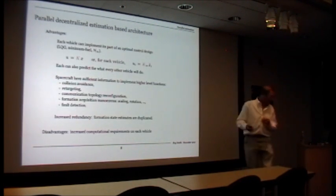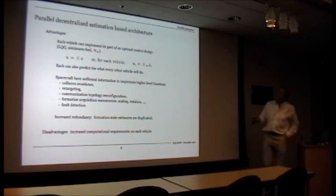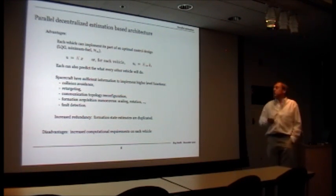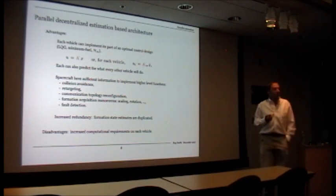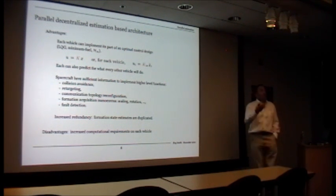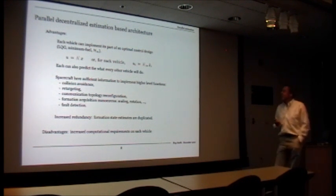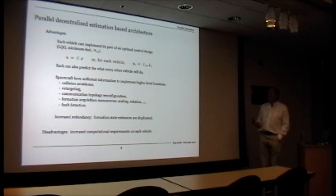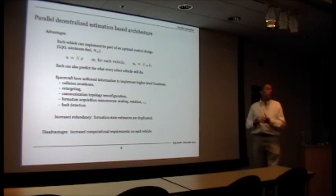Let me talk about some of these advantages. If everyone estimates everything, then you can calculate - because you know the control gains - you can calculate your control action, because that's a function of where everyone else is and where they're moving. But you can also predict what everyone else is going to do, because you have an estimate of the state, their control depends on that state, and you know their control algorithm. This is a cooperative problem. So you can do higher-level functions here. Because you can predict what everyone else is about to do, you can do collision avoidance, retargeting, various things which we normally think in a hierarchy some supervisor would do.